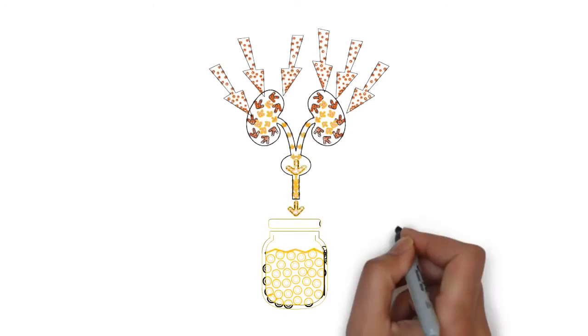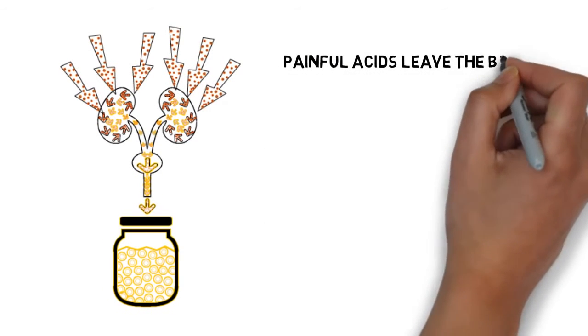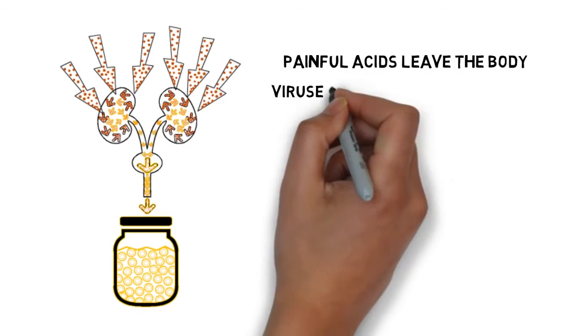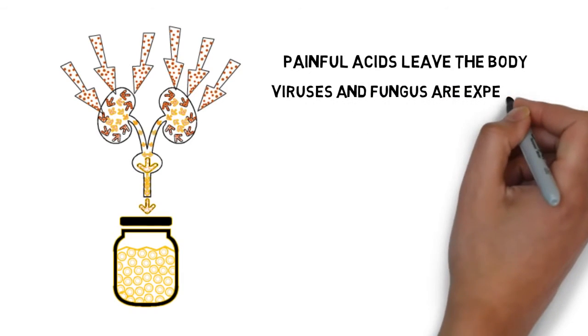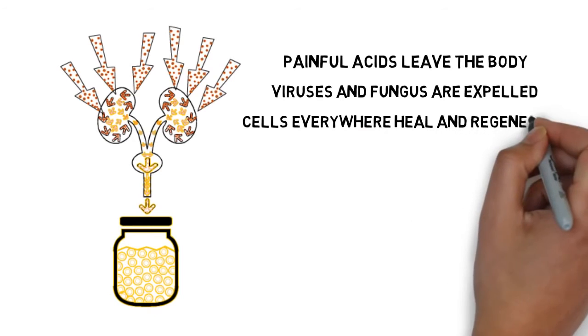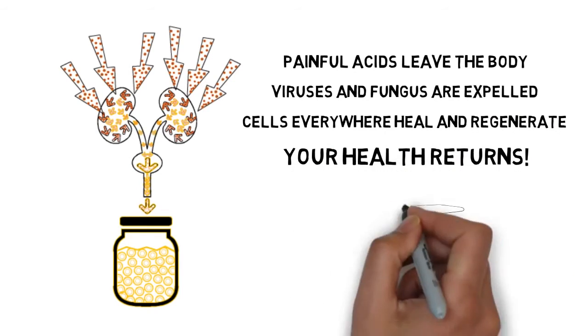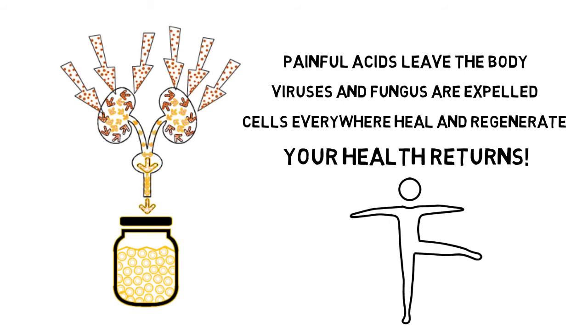When the kidneys finally break loose, you will see lots of sediment or clouds in your urine. Inflammation will start going down and the body will alkalize and rehydrate. Tumors and cysts will disappear. Pain and swelling will subside. Damaged organs, tissues, and cells all over the body will begin to heal and regenerate. You will start to look and feel much younger and have lots more vitality.